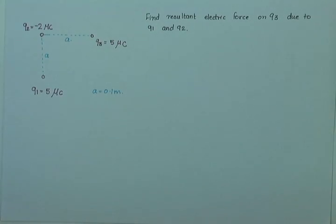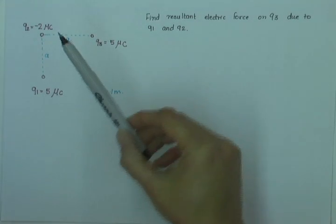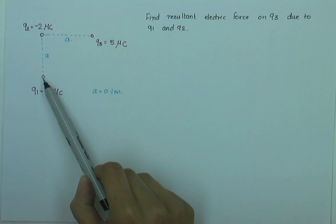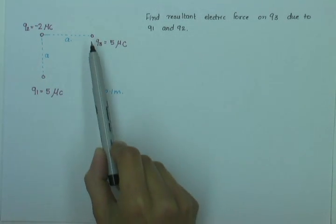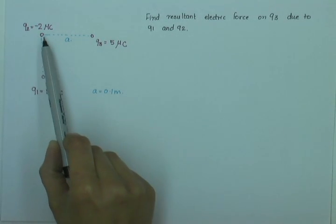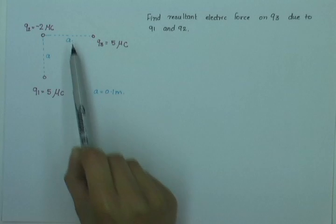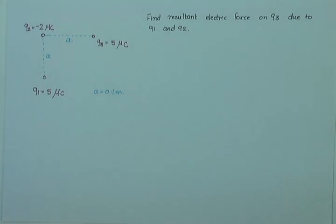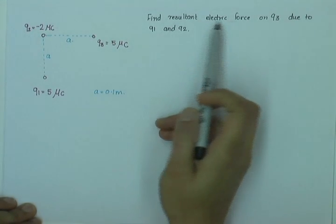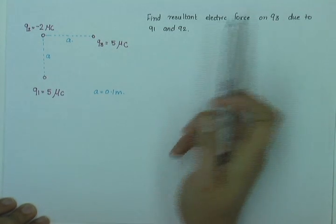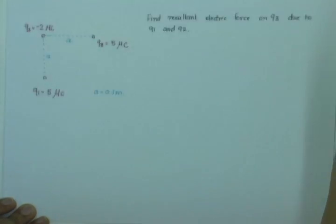In this question, we are given three point charges. Q1 is 5 microcoulombs, Q3 is 5 microcoulombs and Q2 is minus 2 microcoulombs. They are separated by the distance A, where A is 0.1 newtons. And we have to find out the resultant electric force on Q3 due to Q1 and Q2.